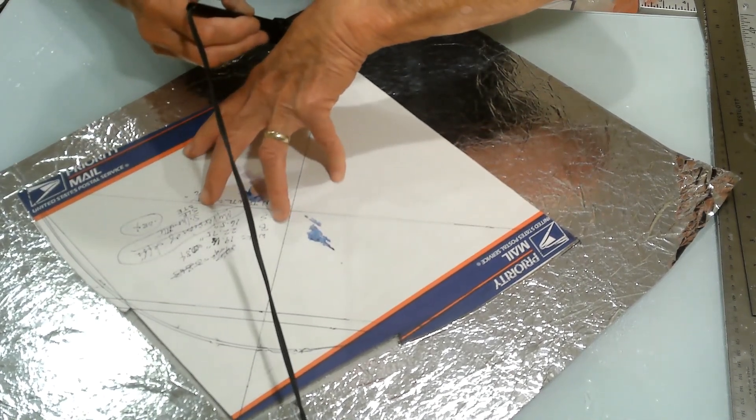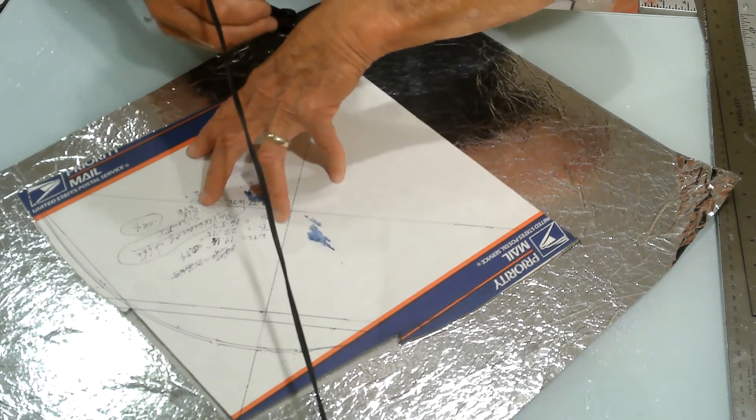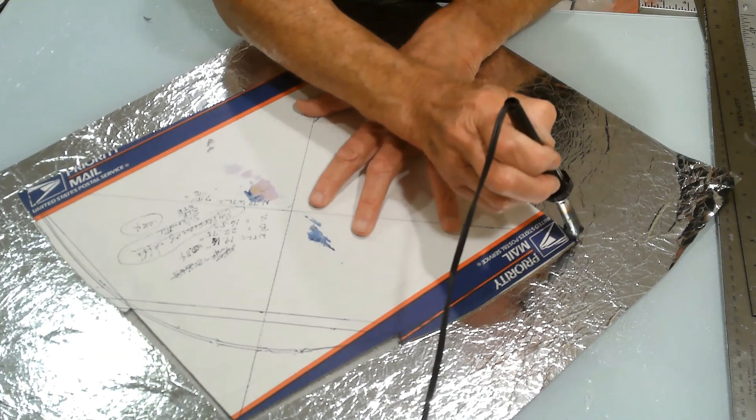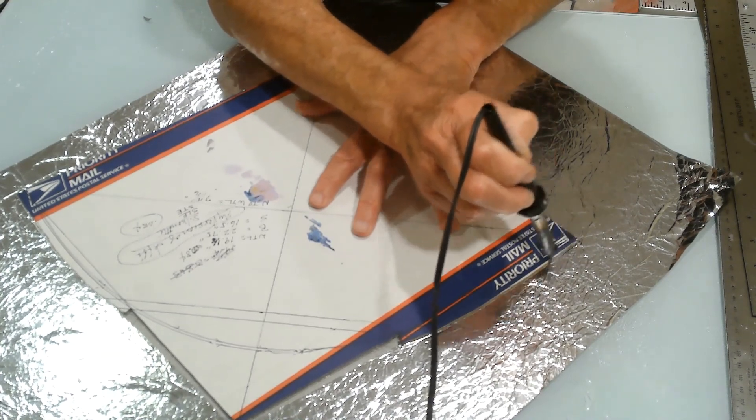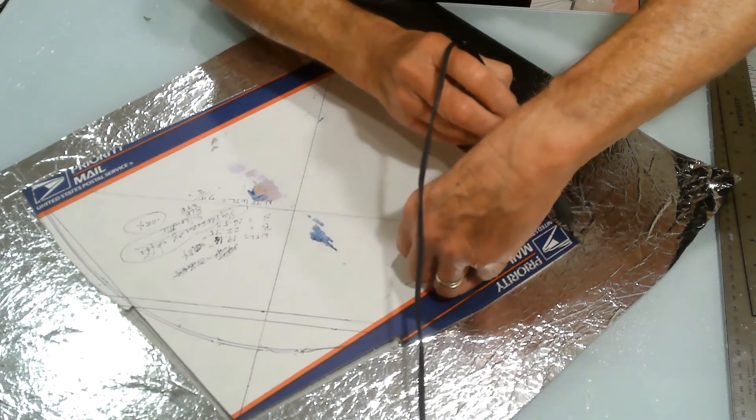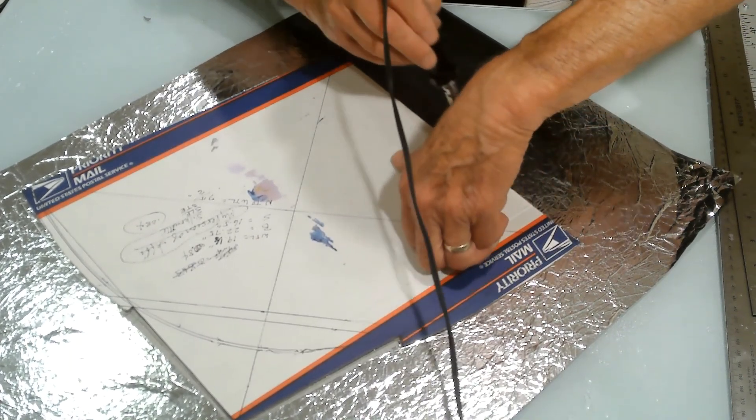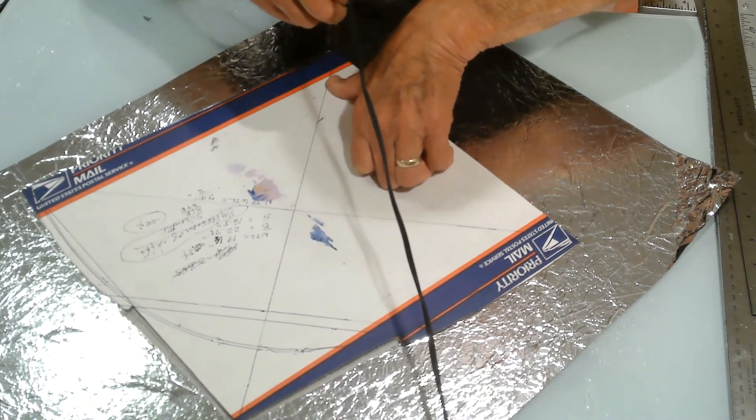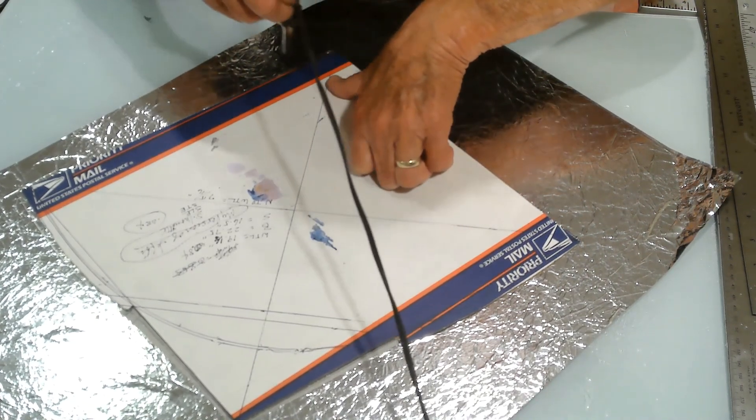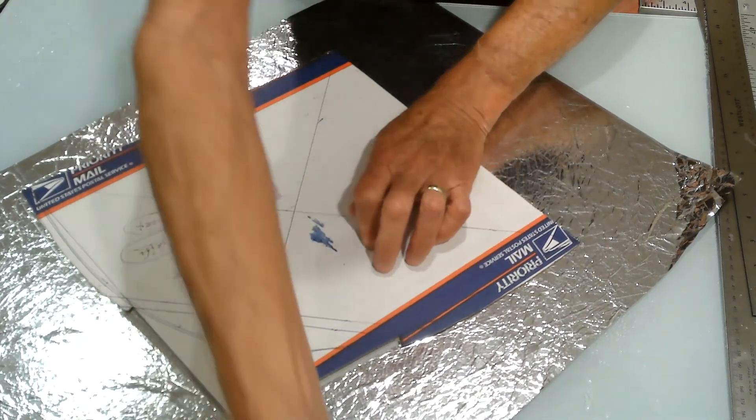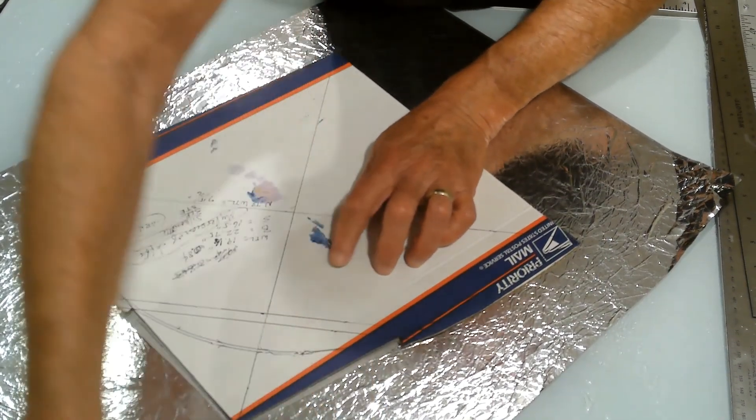It's a very simple process. Hot cutting may sound kind of complicated, but it certainly isn't. This works on mylar, polyfilm, ripstop nylon, Tyvek, any synthetic material can be cut with heat like this.